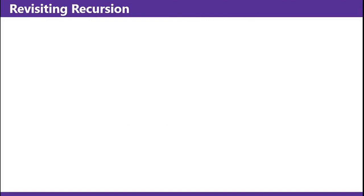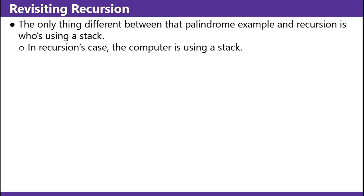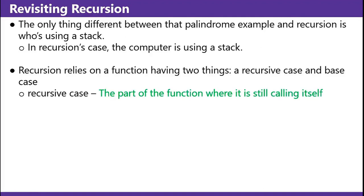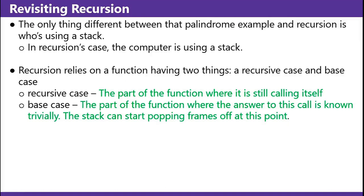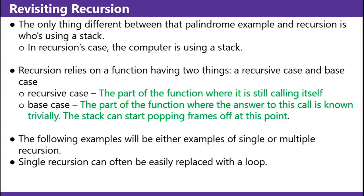Revisiting recursion. The only thing different between that palindrome example and recursion is using a stack — in recursion's case, the computer is using a stack. Recursion relies on a function having two things: a recursive case and a base case. Recursive case: the part of the function where it is still calling itself. Base case: the part of the function where the answer to this call is known trivially — this is where the stack can start popping frames off. The following examples will be either single or multiple recursion. Single recursion can often be easily replaced with a loop.